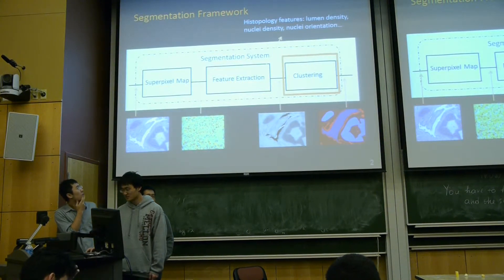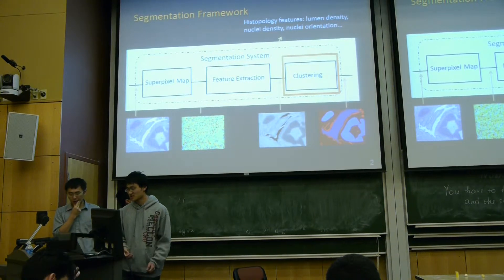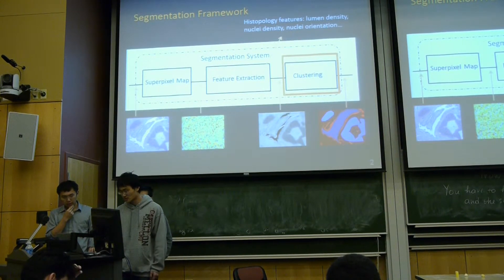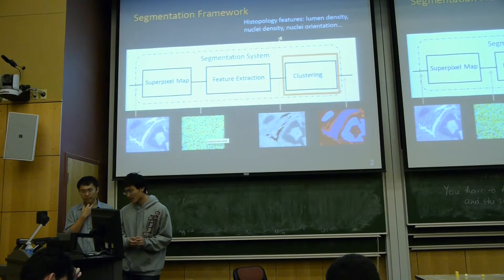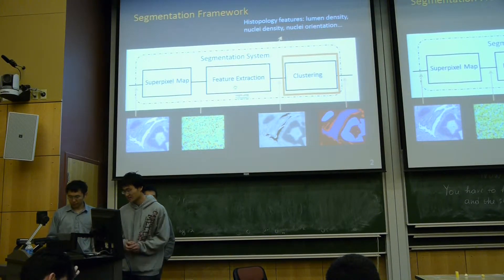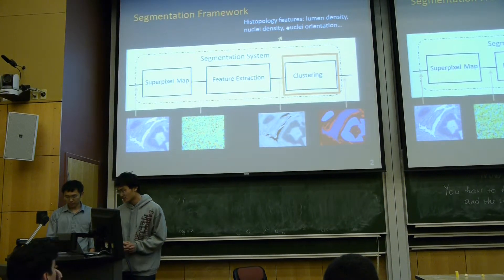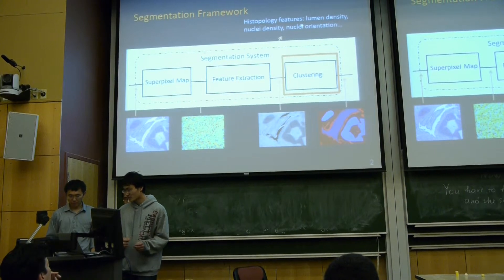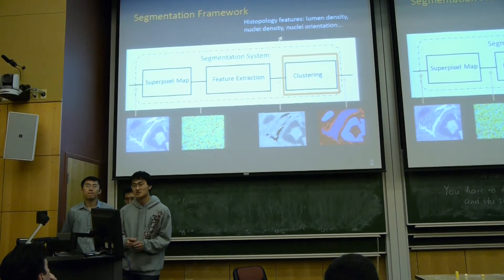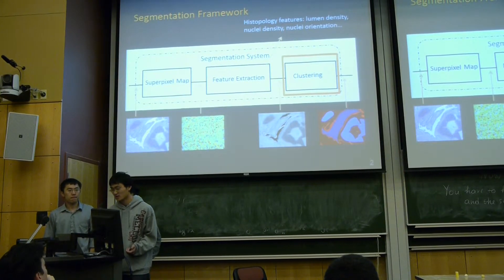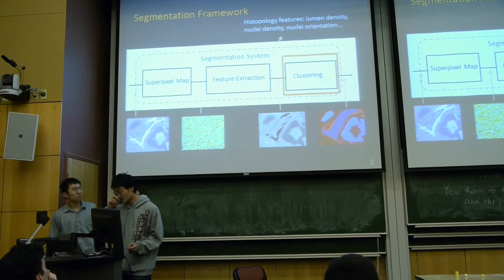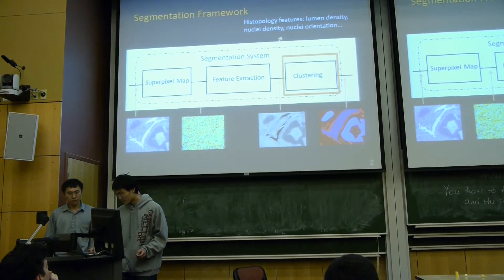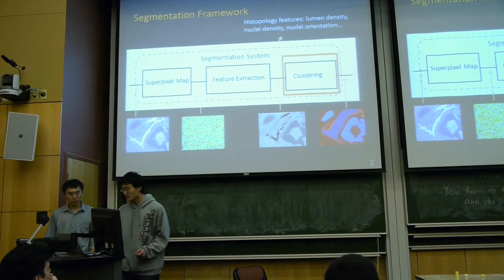This is our segmentation framework. First, to reduce dimensionality, we use superpixel. We map the histology images to a bunch of small superpixels. Then we use feature extraction, which is histopathology features that mimic what pathologists do. Pathologists use background color, nuclear color, nuclear density, or nuclear orientation to visualize the images and do classification. We use the same method or vocabulary. Here's one example of the feature, the nuclear density.